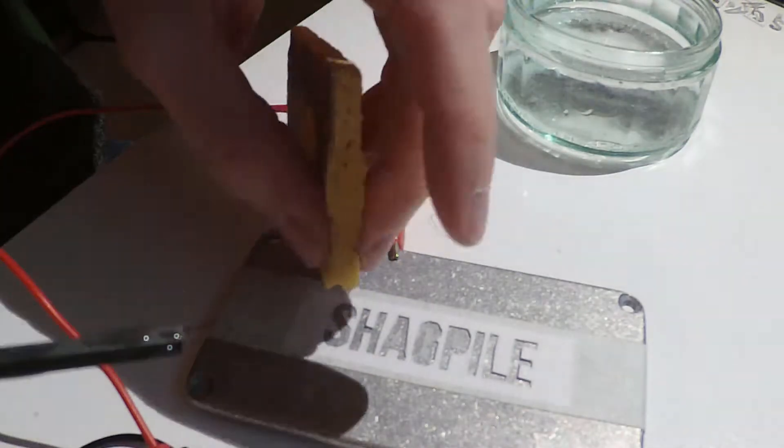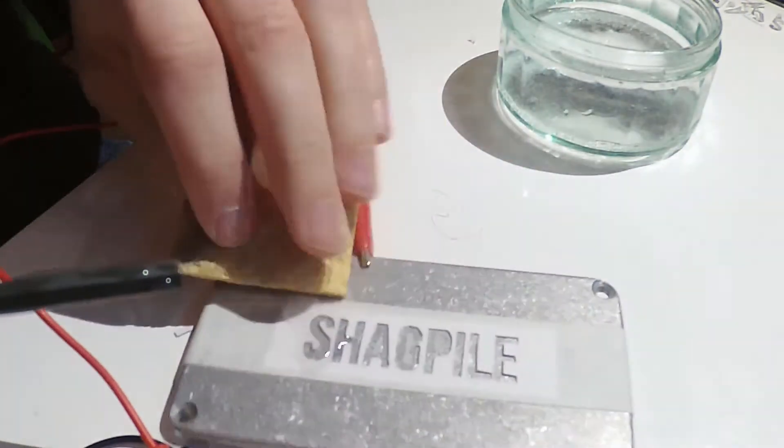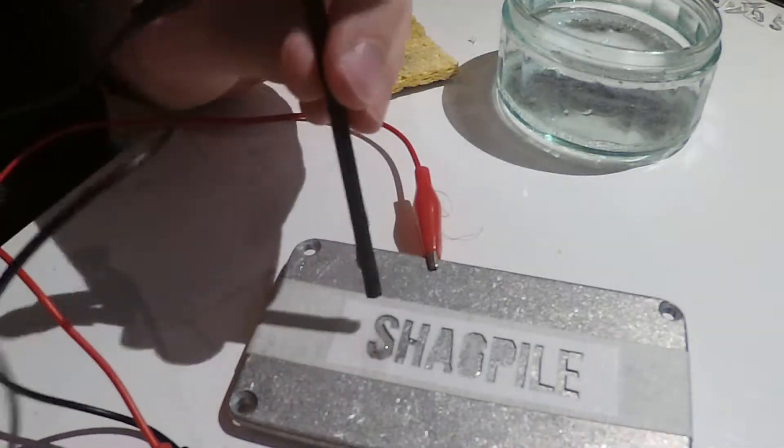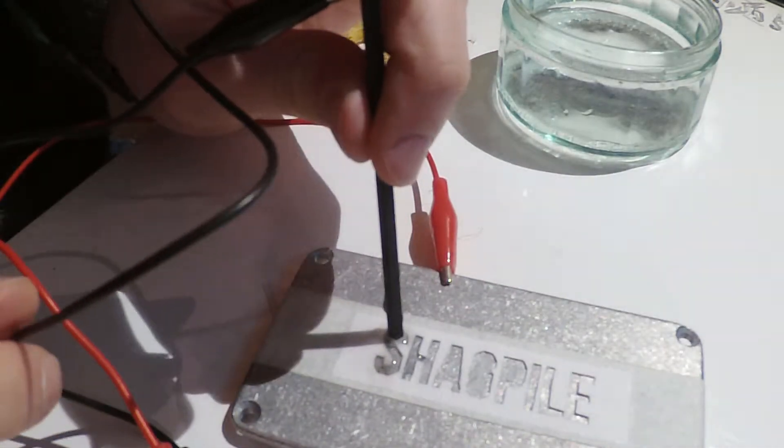And then the black crocodile clip will go on the negative of the battery and to the other end you need either a drill bit or an allen key, that kind of metal basically.